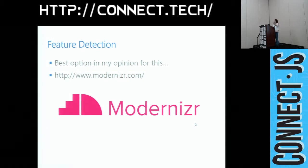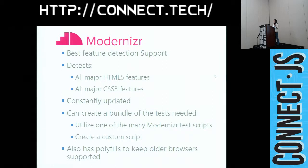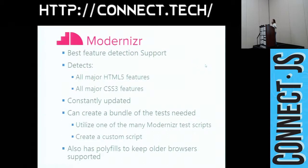Modernizr has been around for a couple of years. It started with an excellent Google engineer, Paul Irish, and has been evolving for three or four years. It provides the best feature detection support. It detects any of the new features for HTML5 or CSS3, and importantly, they update their list constantly — very important because new HTML5 features come out all the time. You can also write your own testing scripts for more sophisticated work on top of it.